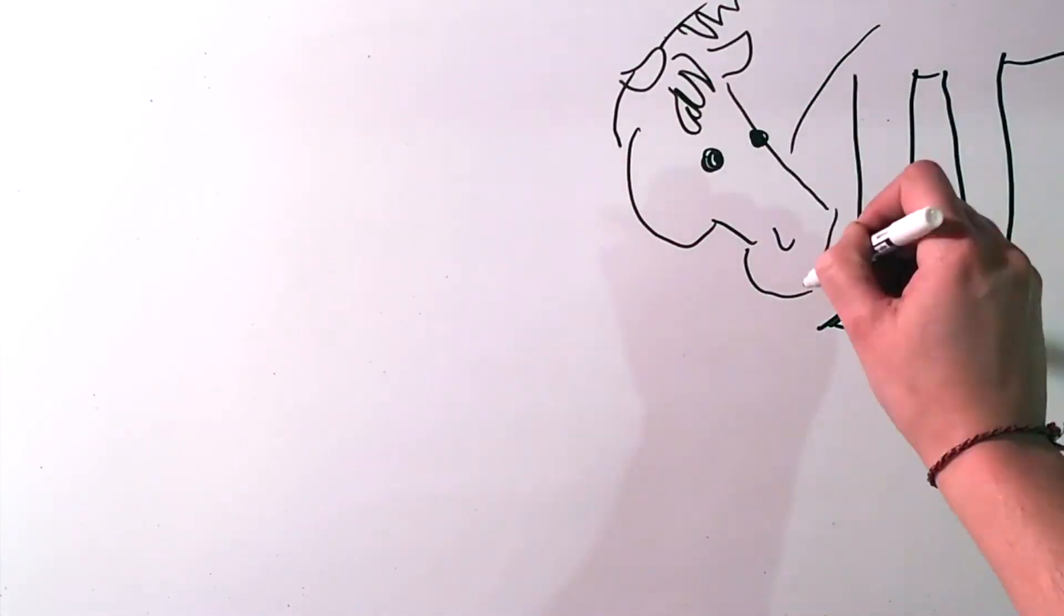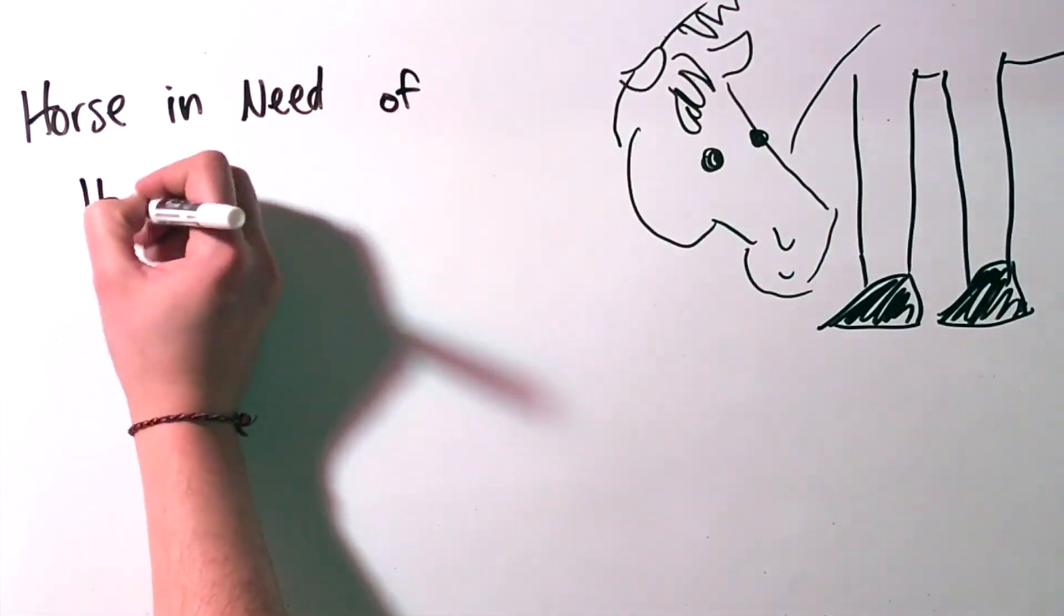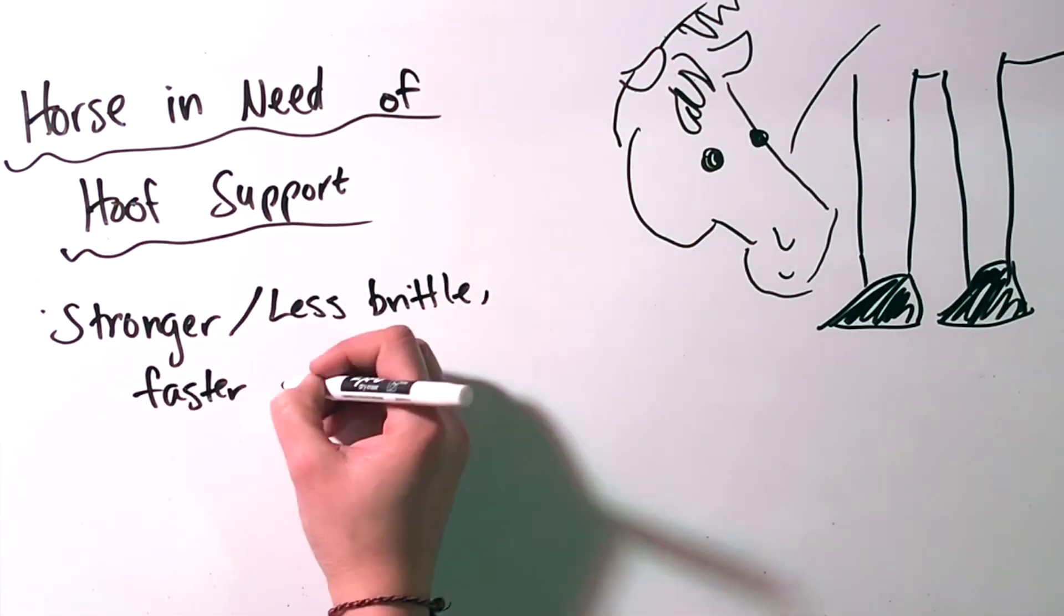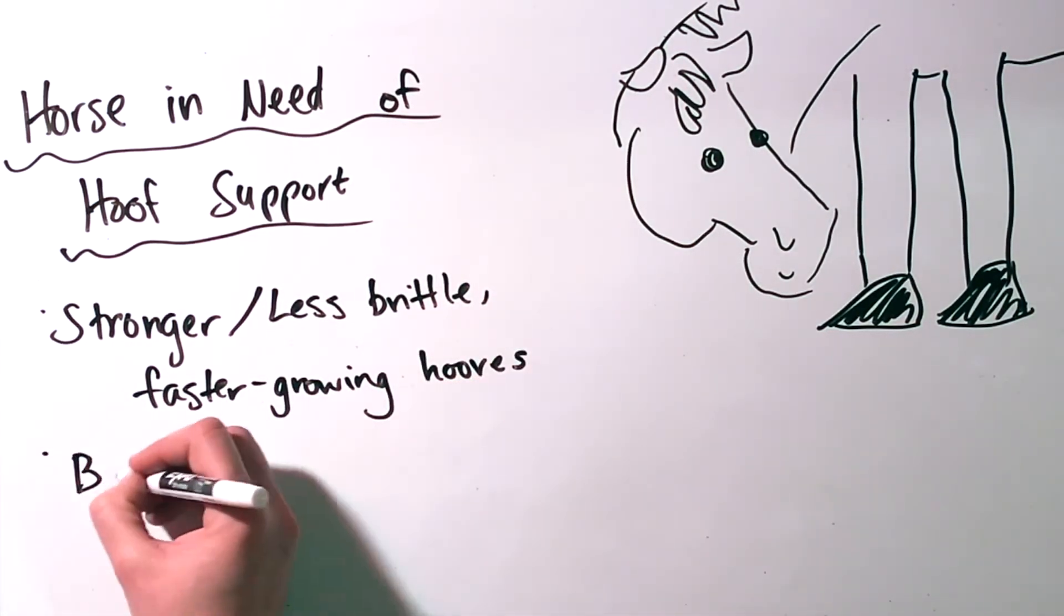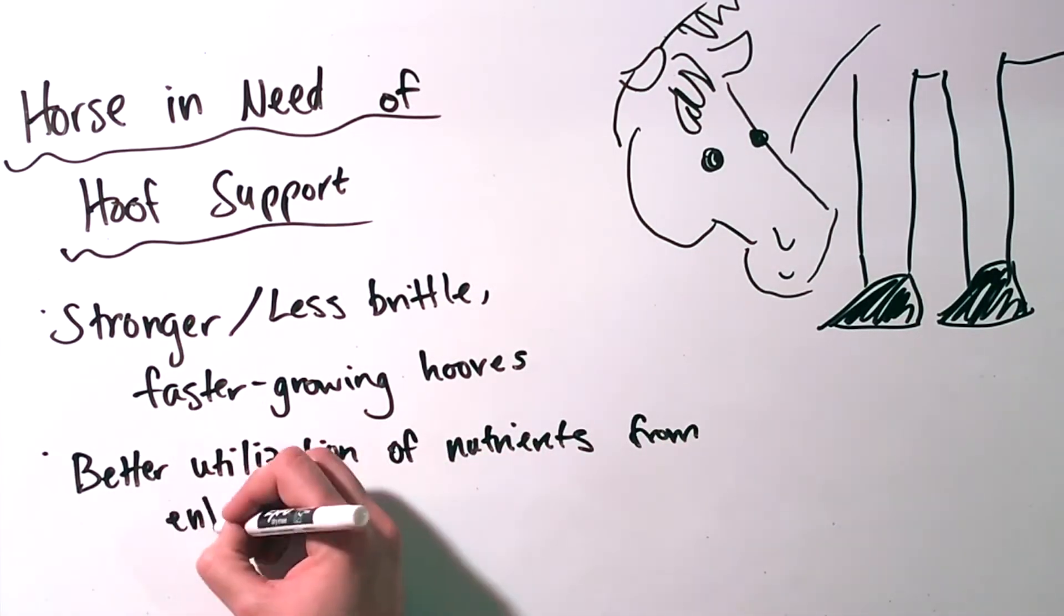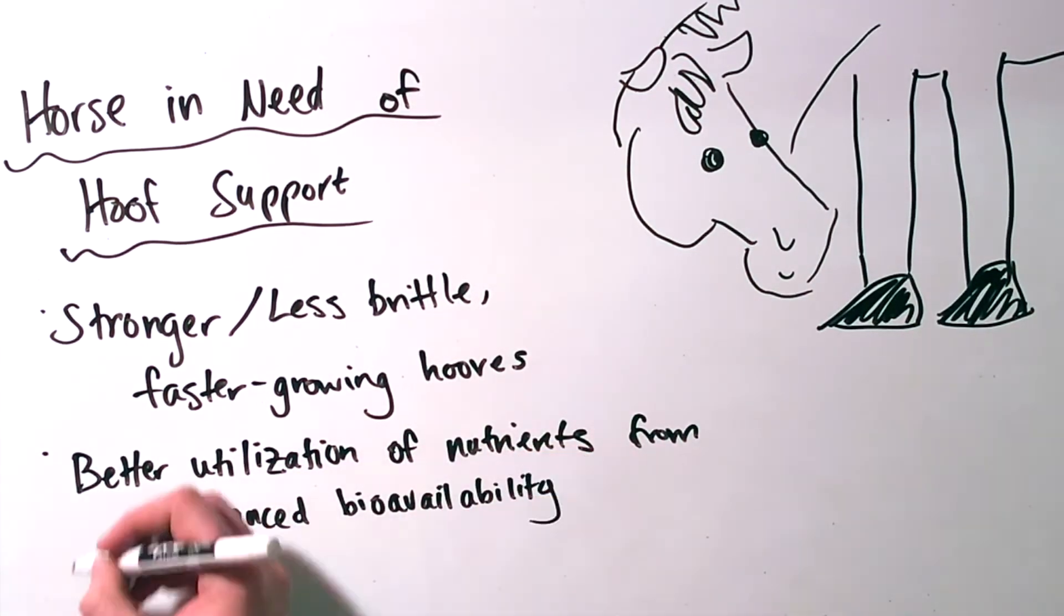When horses in need of hoof support have better mitochondrial function, they grow stronger, less brittle hooves more quickly. This is due in part to a better utilization of the nutrients from enhanced bioavailability and in part to improved cellular repair functions.